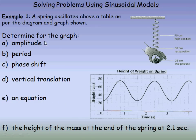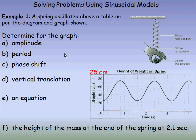First, the amplitude. There are a few different ways we can find it. Since the difference between the rest position and the high of 75 is 25, or the rest position and the low of 25 is 25, the amplitude must be 25 centimeters. On the graph we can see there's a trough at 25 and a peak at 75 — the difference between those is 50 — and the amplitude is half of that. So there are several ways to find the amplitude as 25.